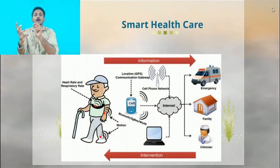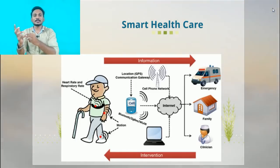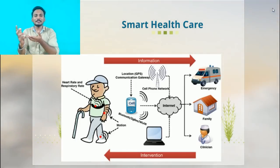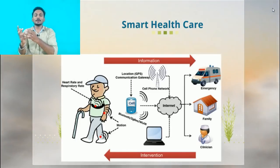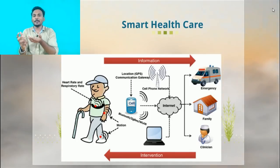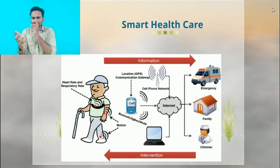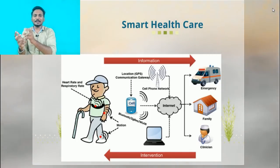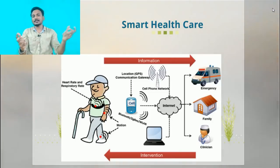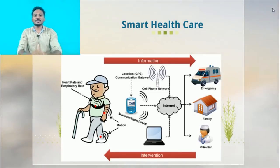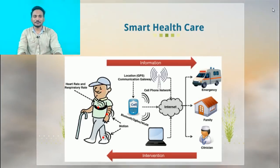For Smart Health Care, I am going to fix a heartbeat sensor. With this sensor, the patient will have a range of heartbeat monitored. If the heartbeat increases or decreases beyond the normal range, it will automatically send a notification to the doctor. So within a minute, the patient can get help.